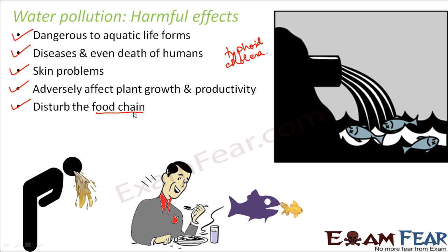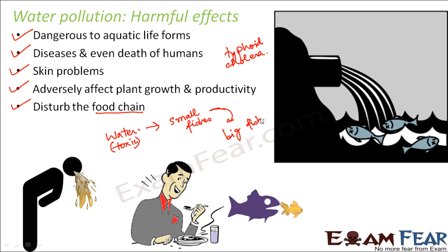When water gets polluted, poison enters the bodies of aquatic animals like fishes. Small aquatic organisms take in the toxic water, and when these small fishes are eaten by big fishes, the big fishes also contain that toxic material. When humans eat those big fishes, they too get the toxic substance inside their bodies. These toxic substances can cause diseases in all the organisms involved in the food chain, and if extremely toxic, can even kill them.